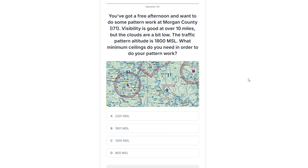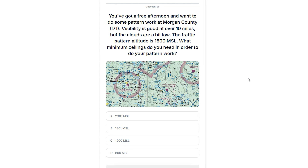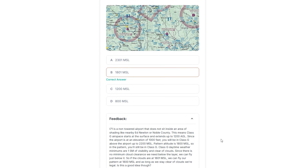So what are the weather minimums in Class G airspace? First, we have to specify that we're talking about daytime flight, which the question tells us because it mentions a free afternoon. We're looking at flight below 1200 AGL — Class G airspace above 1200 AGL is pretty rare. The important one to remember: daytime below 1200 AGL, it's one statute mile of visibility with the requirement to stay clear of clouds. There's no minimum cloud clearance — below, above, or horizontally. So at pattern altitude of 1800 MSL, the clouds only need to be at 1801 MSL or above, just high enough for us to be clear of them.